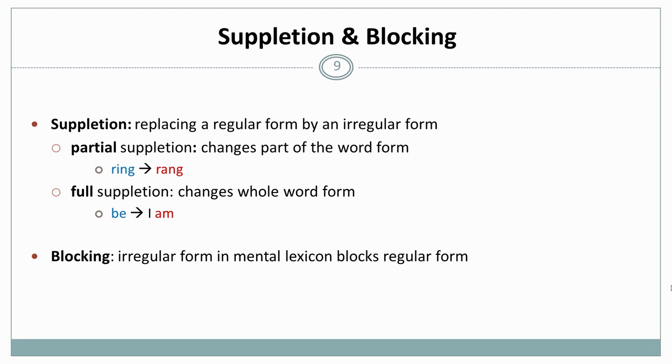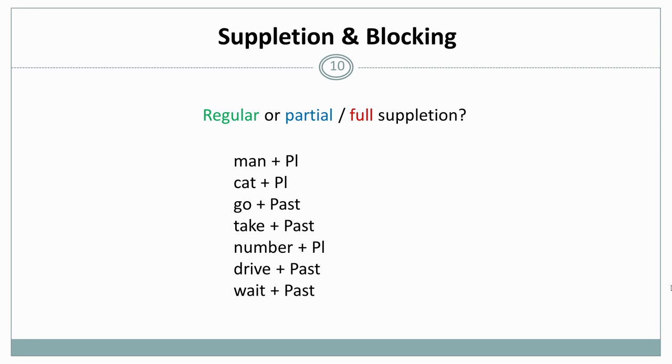So here are a few examples of regular forms or partial and full suppletion. The plural of man is men. This is not the regular form, which would be mans, so it's partial suppletion. We still have some of man in there.